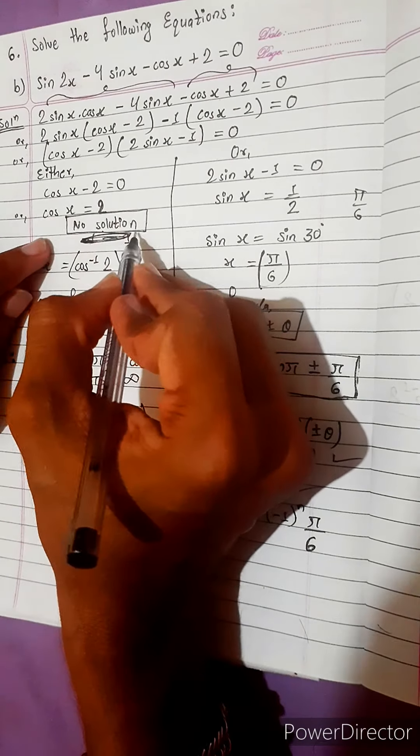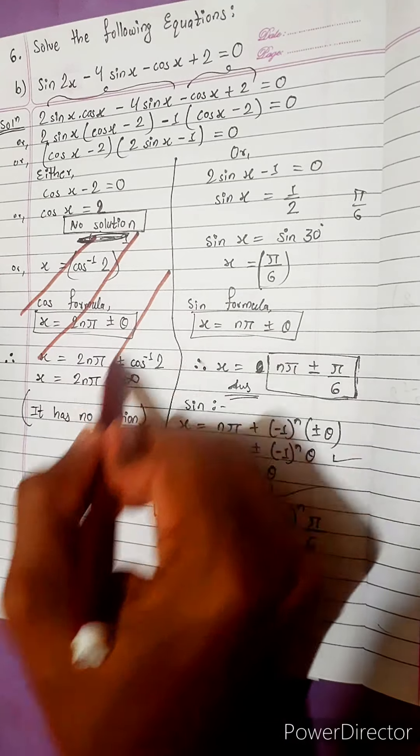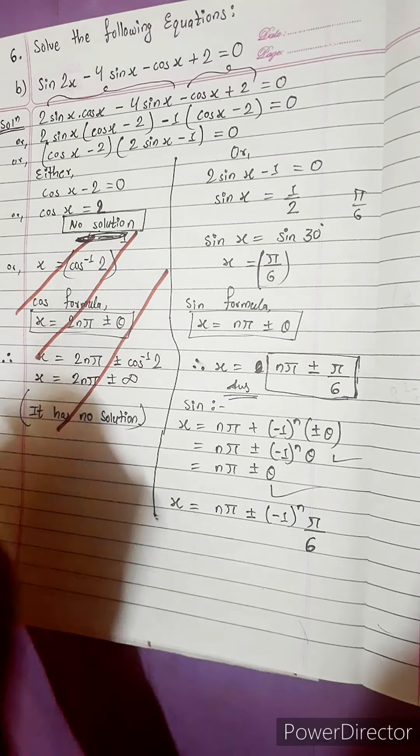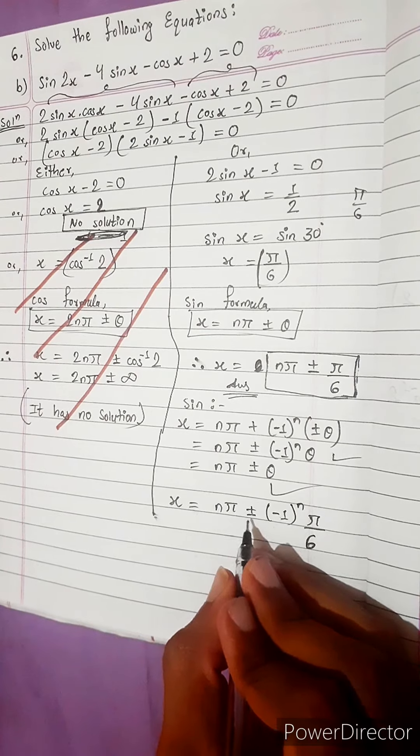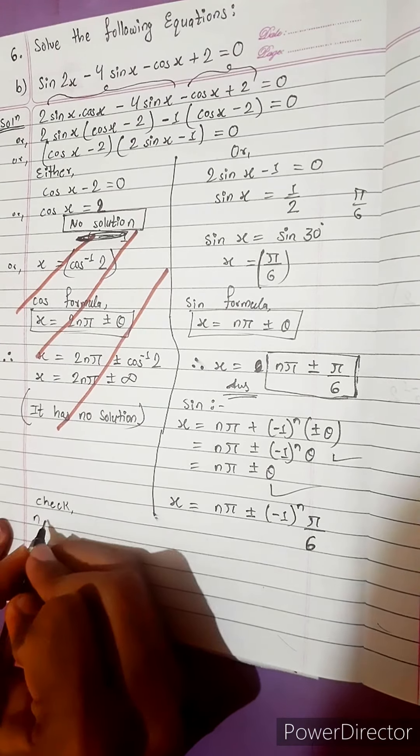So it has no solution. You can write here also no solution. Why you can write here also? Because when there is no value of 2 in cos ratio, so no solution. Which one is better? This is better. Don't write from up to here.